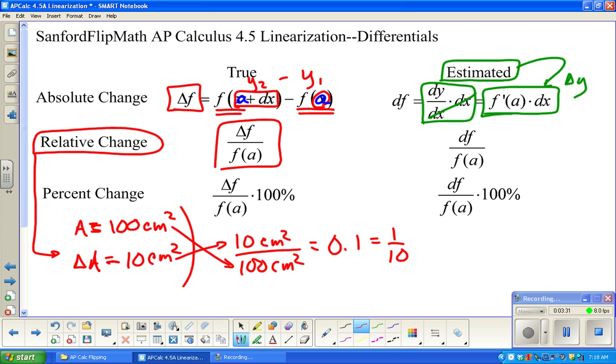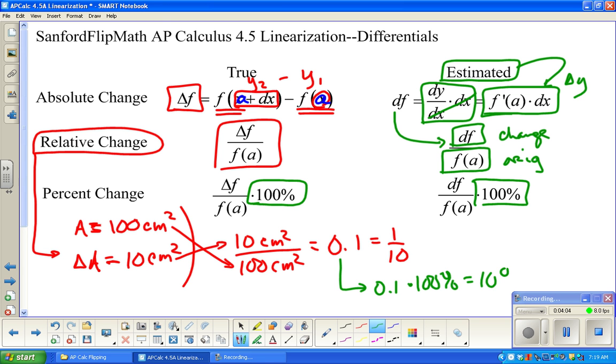Relative change has to do with compared to the overall. So just for instance, let's say I have an area initially that area is 100 square centimeters. If I know that I have a change in area, or the area increased, let's say 10 square centimeters, then the question is what's the relative change? How does it compare to the original? Well, what you would do is take the 10 square centimeters over the 100 square centimeters and say that was an increase of 0.1 relatively.